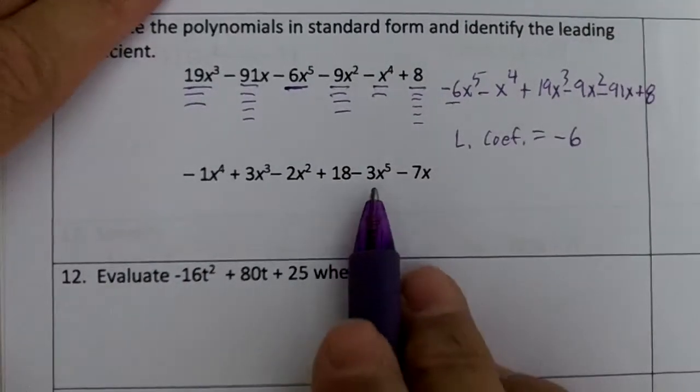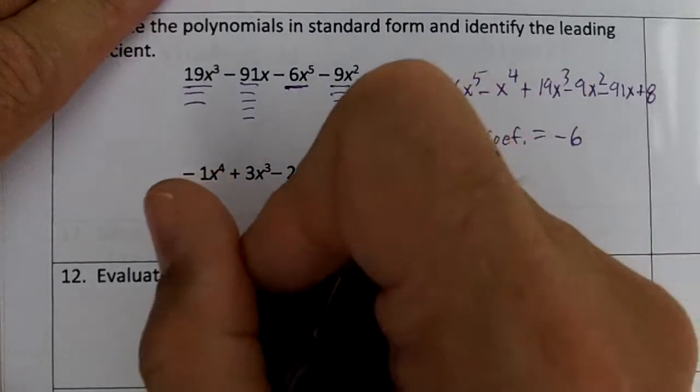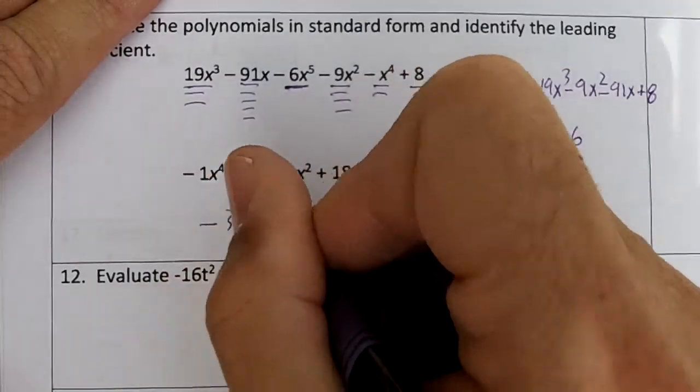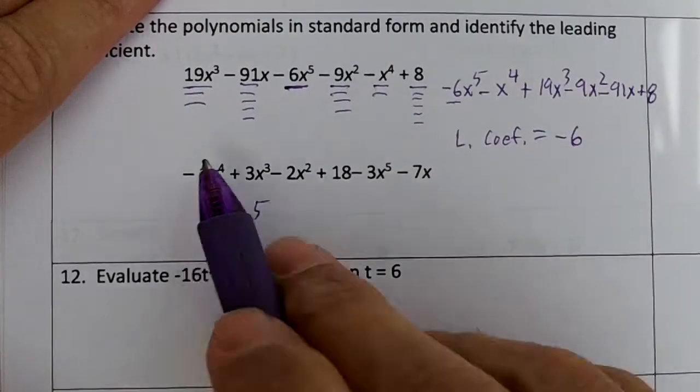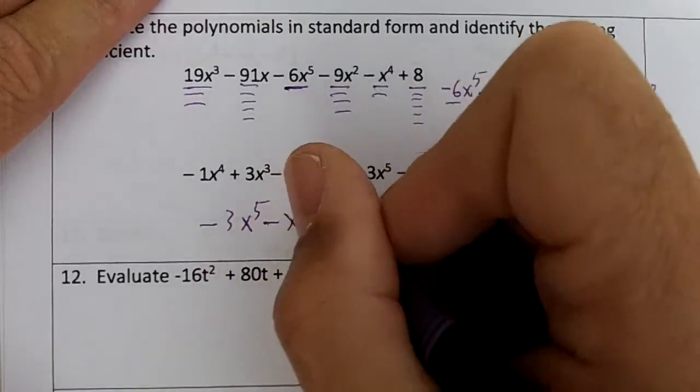On the next one, the largest exponent is to the fifth, so we're going to write it first. We're not going to underline on this one. Then we're going to have minus 1. We don't need the 1, so just minus x to the fourth.